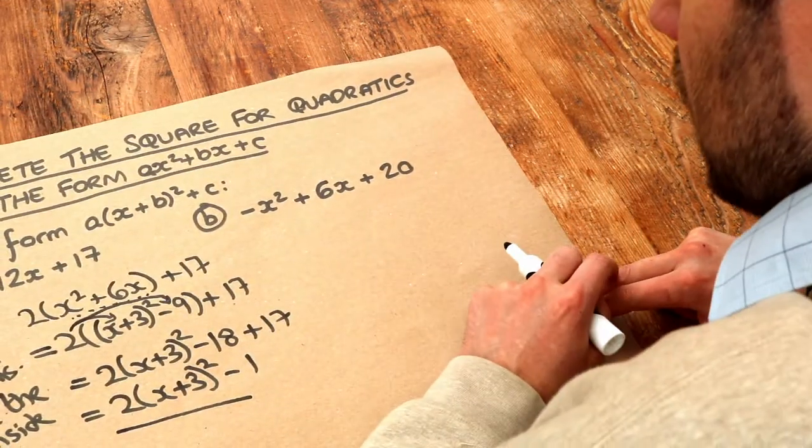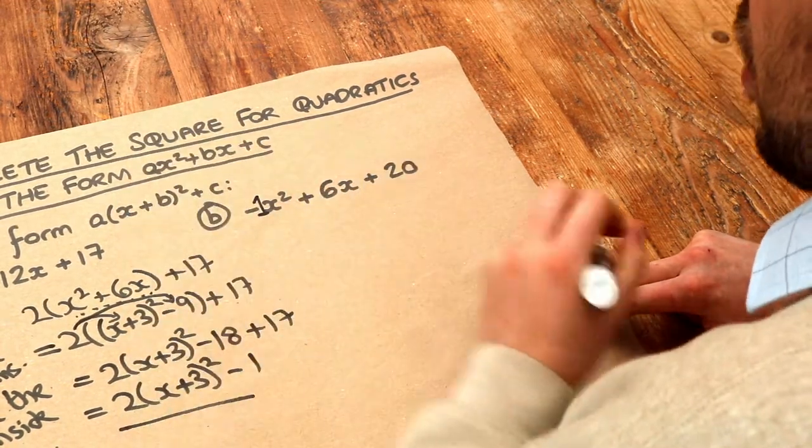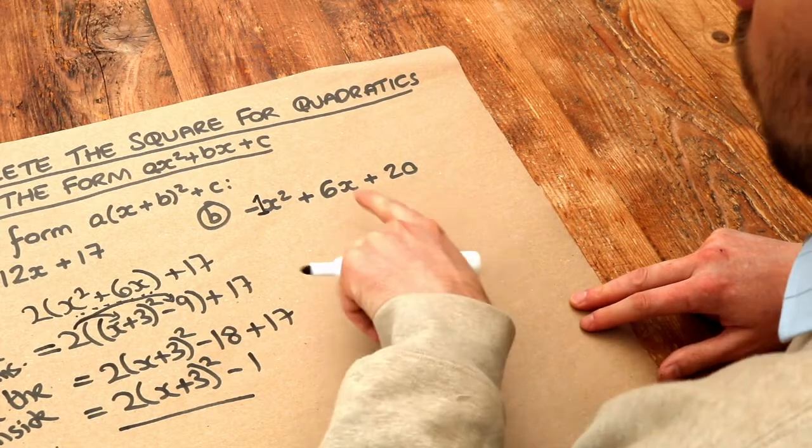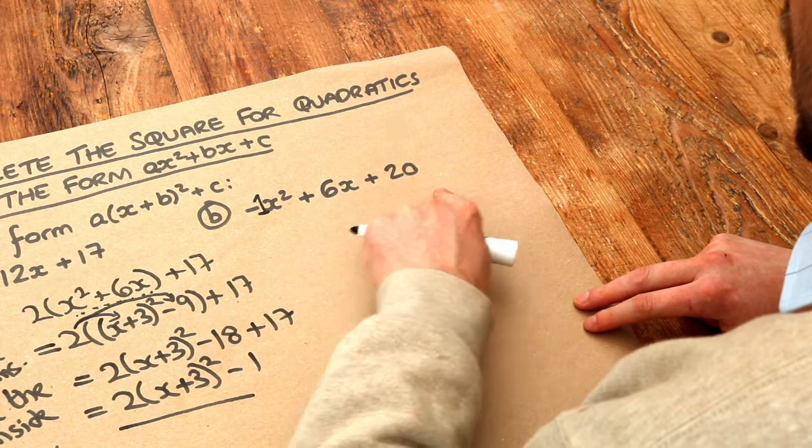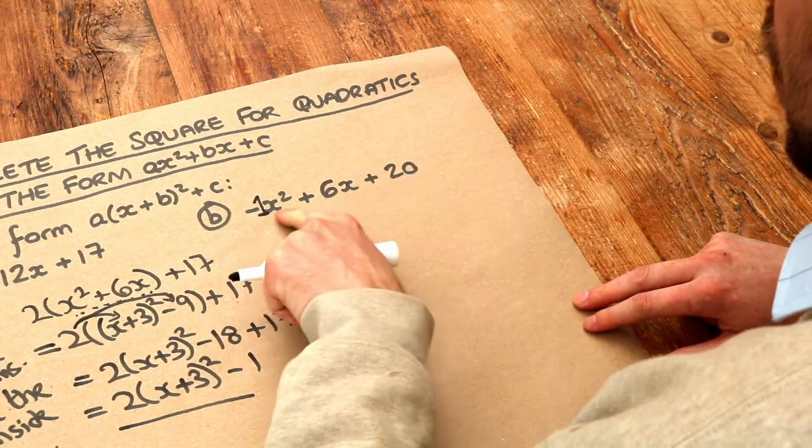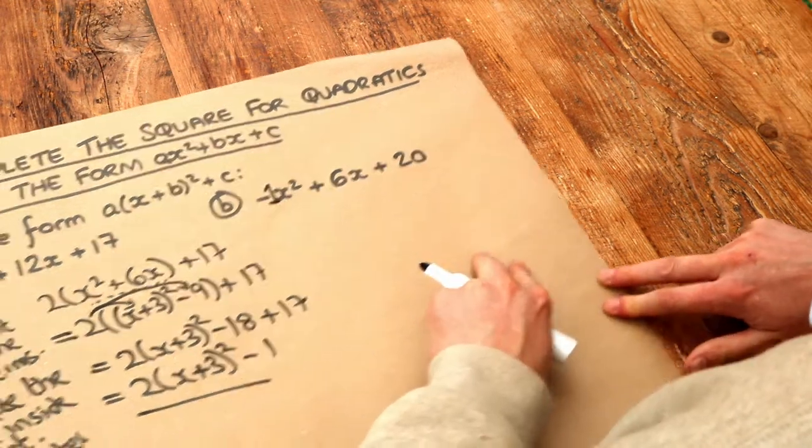Right, what about this second one? Now implicitly there's a kind of ghostly one here. So it's minus 1x squared plus 6x plus 20. And by the way, if these terms are not in the order something x squared plus something x plus something, then reorder them first so that the x squared term is first, the x term is next, and then the constant term is last.